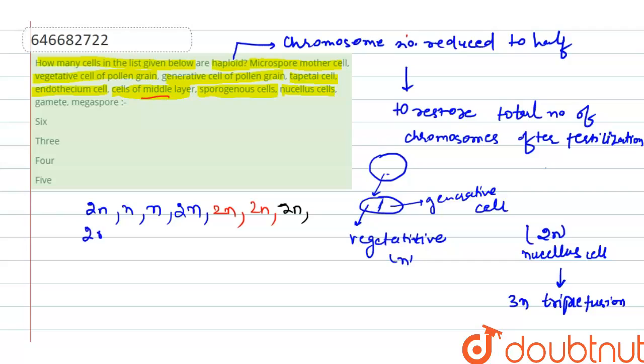Our next option is gamete. As we all know, gamete is always haploid, so this will be n. Next option is megaspore. Megaspores are the cells from which ovum is formed, so this is also 2n.